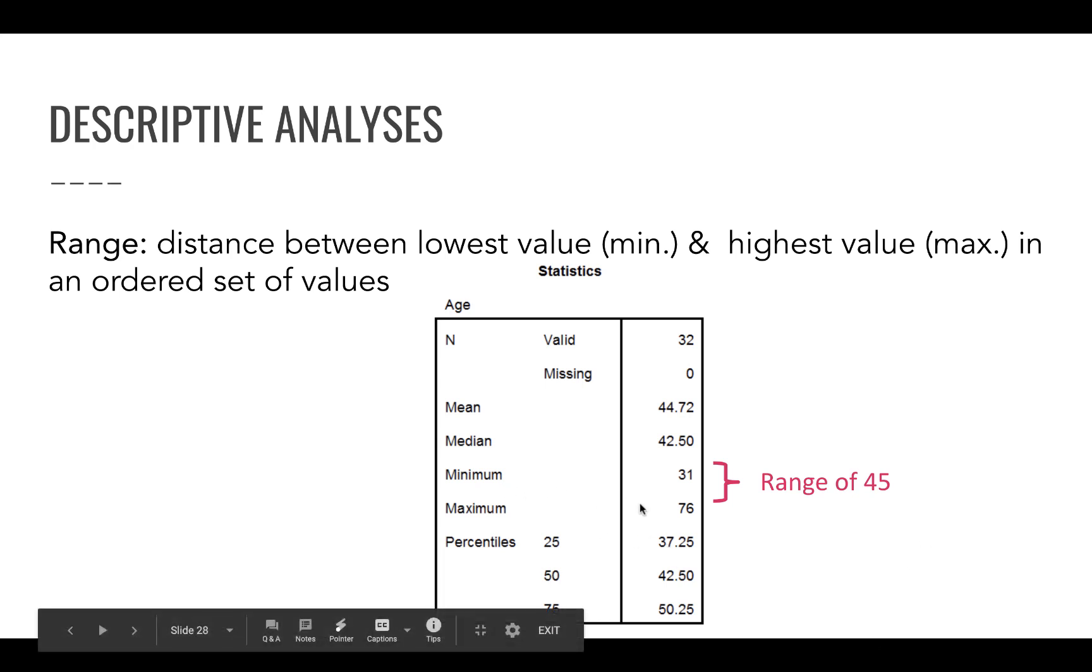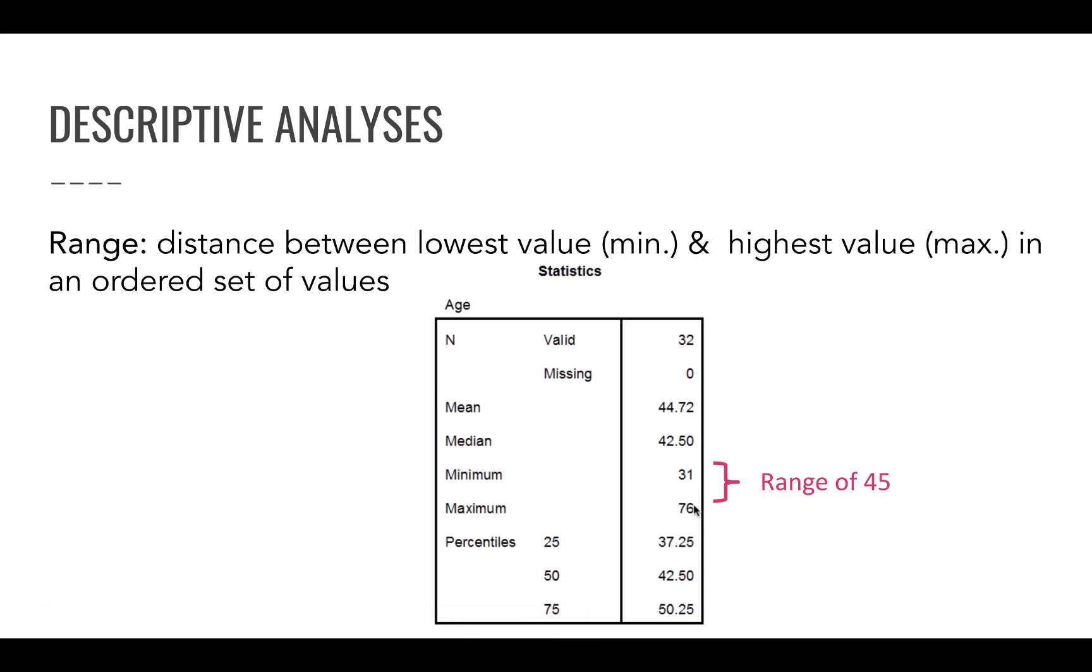Another way to look at measures for variability is by means of the range. The range is literally, when you have numerical data, the difference between the lowest and the highest value, the difference between the minimum and the maximum. This table represents age. You see that the minimum age of the people in the sample is 31. So the youngest person in the sample is 31 years old. The oldest person in the sample, maximum, is 76. So the range is 45.